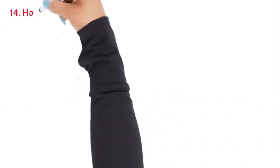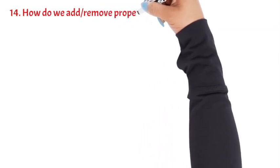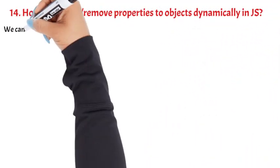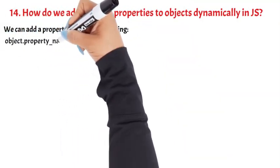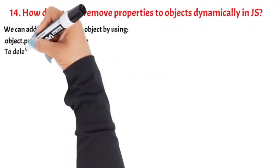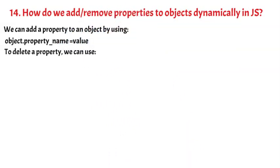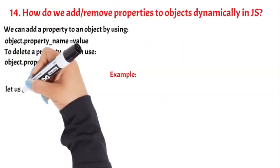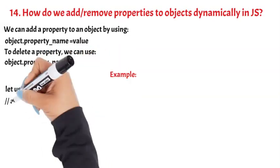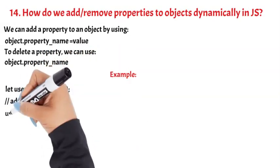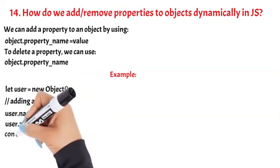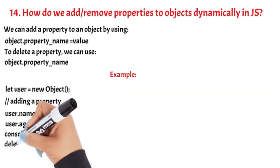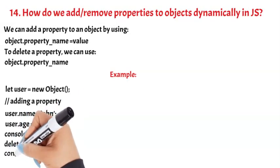Question 14: How do we add/remove properties to objects dynamically in JS? We can add a property to an object by using object.property_name = value. To delete a property, we can use delete object.property_name. Example: let user = new Object(); user.name = 'John'; user.age = 22; console.log(user); delete user.age; console.log(user).